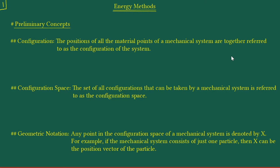Here are some preliminary concepts. The first concept has to do with the configuration. The configuration is defined as the positions of all the material points of a mechanical system. All these positions together are referred to as the configuration of the system. Written in this fashion it may not make too much sense unless you have a certain mathematical flavor, so let's see if we can concretize the ideas a little bit.